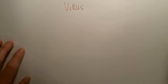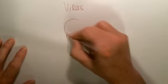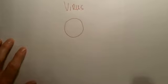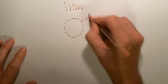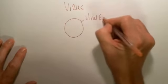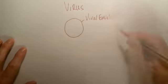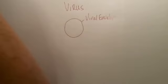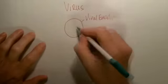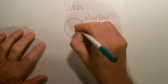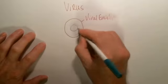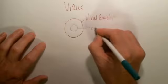Now, the virus parts that you need to know. There are basically two types of viruses, but I'll give you the general piece first. The virus basically has this outer coat, and this outer coat is called the viral envelope. The next piece in that we need to talk about is the capsid.